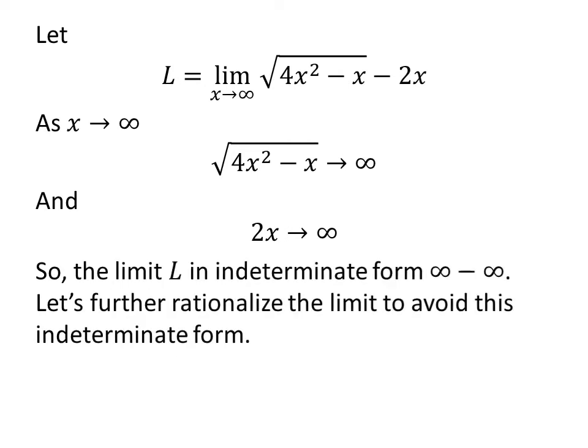As x approaches infinity, square root of 4 times square of x minus x also approaches infinity. So we can see that the limit L is in indeterminate form, infinity minus infinity. Let us further rationalize the limit to avoid this indeterminate form.